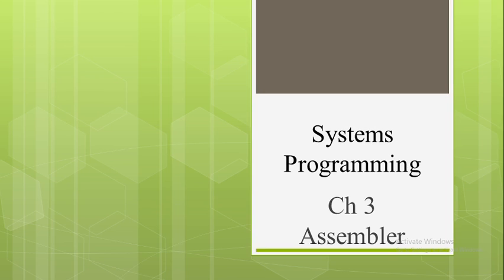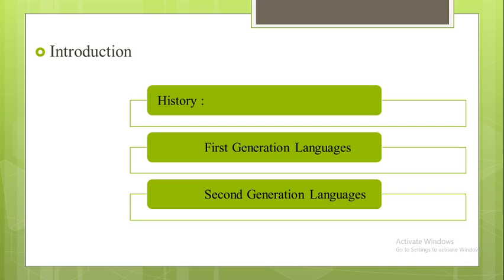Hello students, today we will start the third chapter and the name of this chapter is assembler. First of all we will see the introduction of assembler, where we will see the history of first generation languages and the second generation languages. In first generation languages, machine level languages were used to write computer programs.